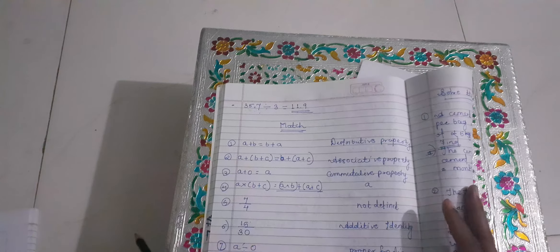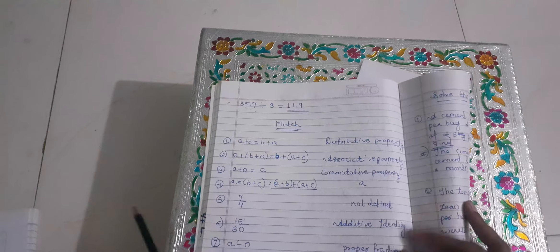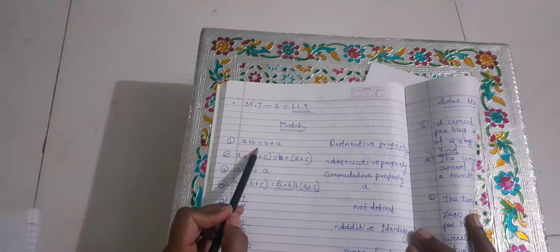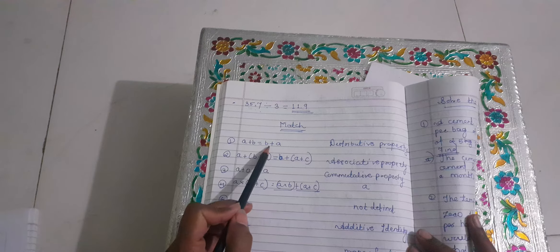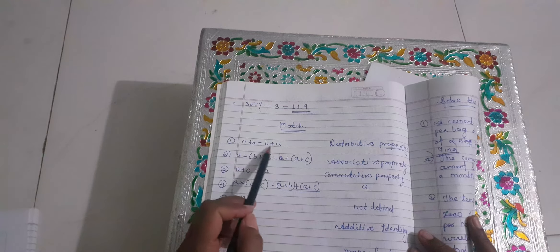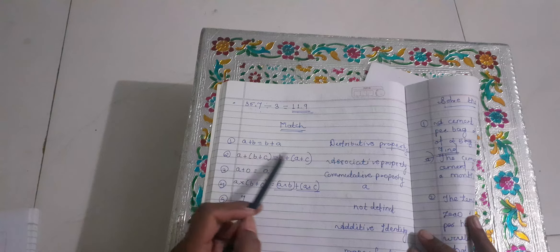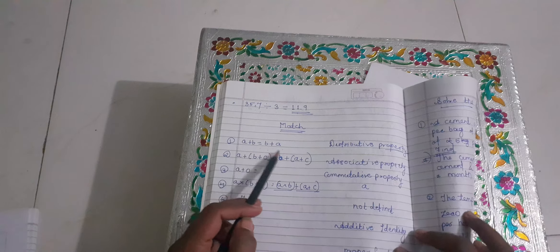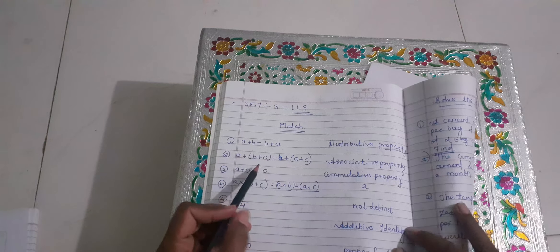Then, match the following. Here are some properties: A plus B is equal to B plus A — which property is this? It's the commutative property.